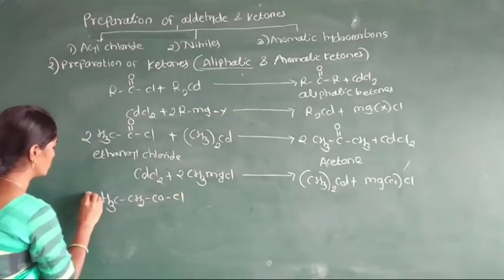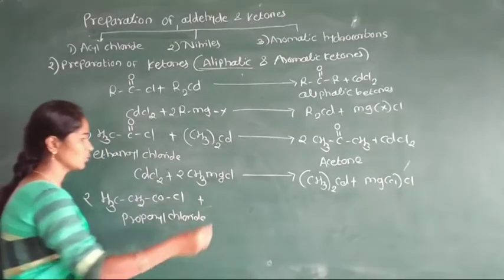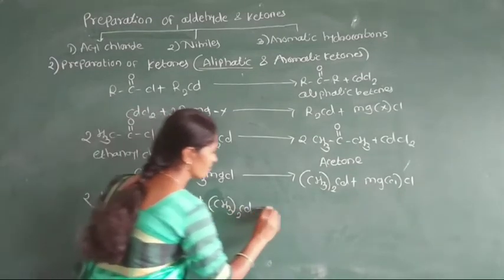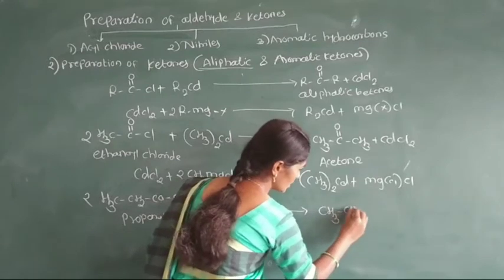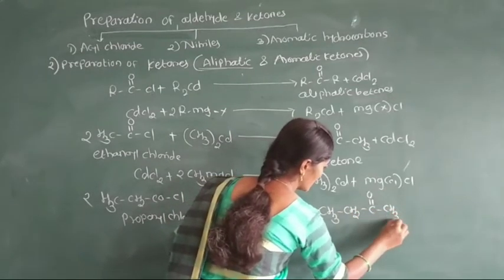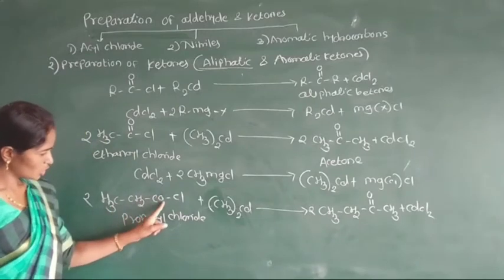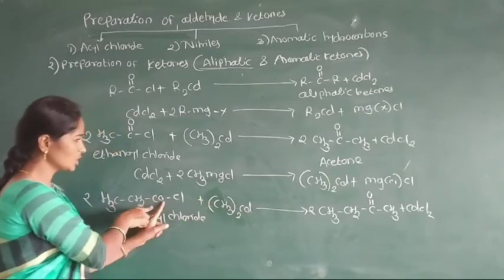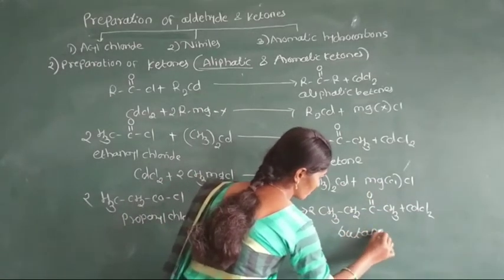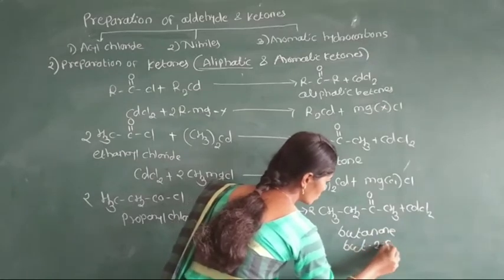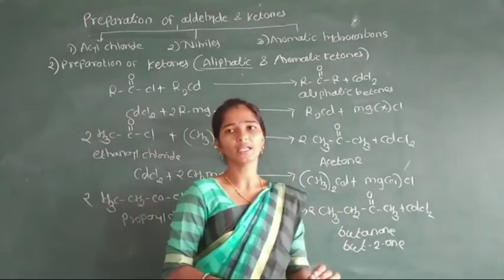For another example, propanoyl chloride reacts with dimethyl cadmium. Here, formation of CH3, CH2, CO, CH3 — that is, the product is CH3CH2COCH3. Two molecules of propanoyl chloride react with dimethyl cadmium. The name of this compound is butanone, or another name, but-2-one. It is a preparation of aliphatic ketones by treatment of acyl chloride with dimethyl cadmium.